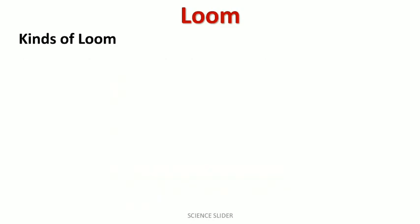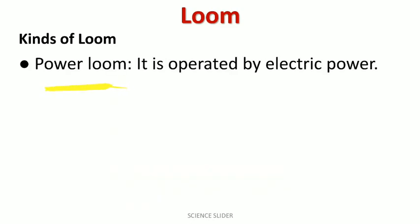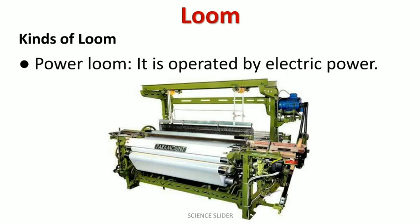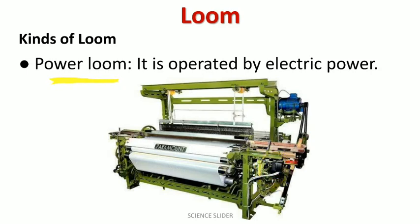There is another kind of loom, and it is operated by electric power. This loom has a motor which starts with the help of electric power. Through this motor, weaving can start. This is called a power loom, and for the power loom, we will need an electric supply.